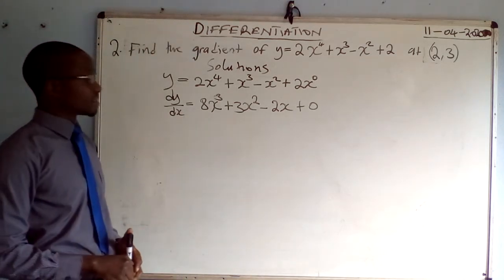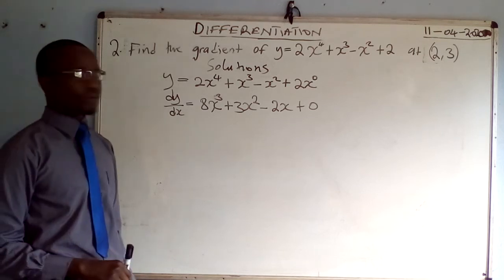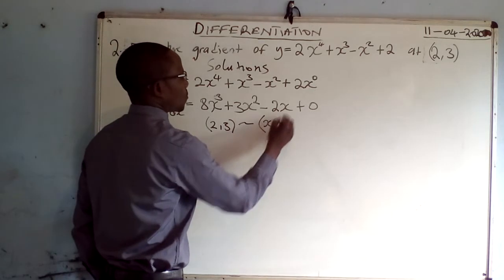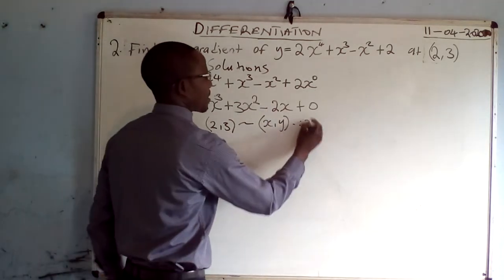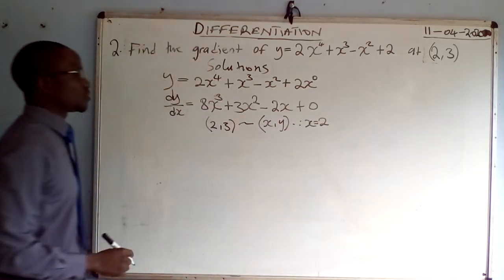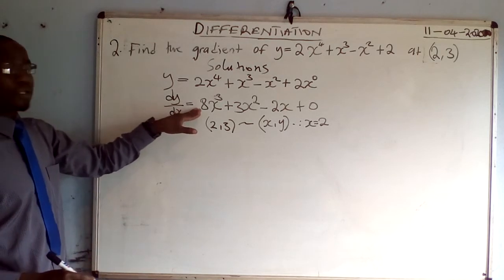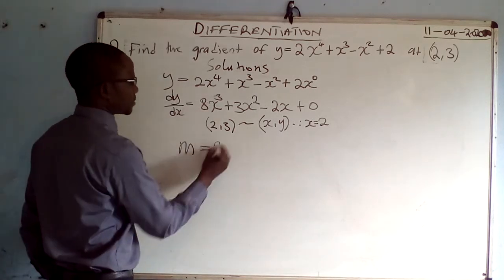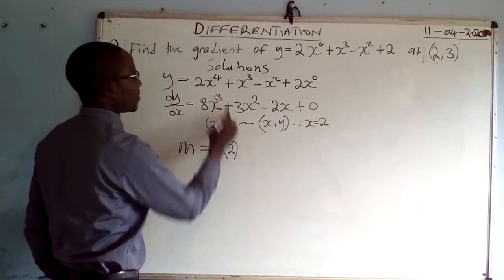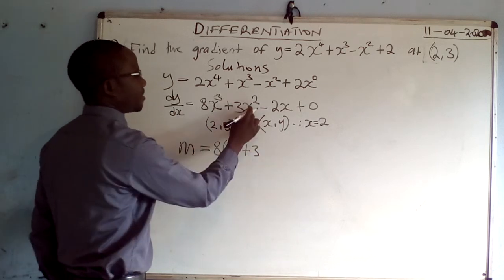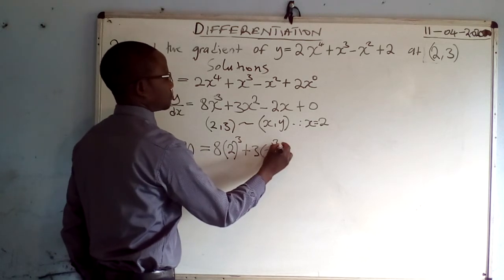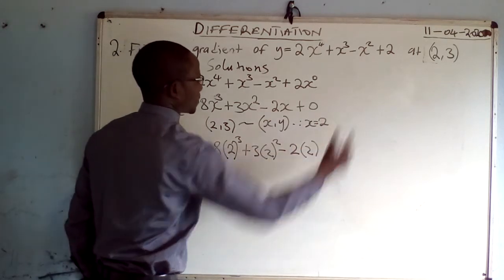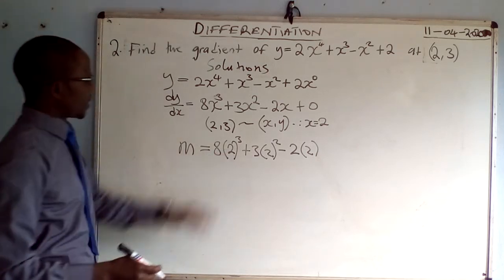At this point we have the gradient function and are ready to find the gradient. From the coordinates (2, 3), this corresponds to x and y, meaning x = 2. Substituting x = 2 into the gradient function gives: gradient = 8 times 2 to the power 3, plus 3 times 2 to the power 2, minus 2 times 2, plus 0.